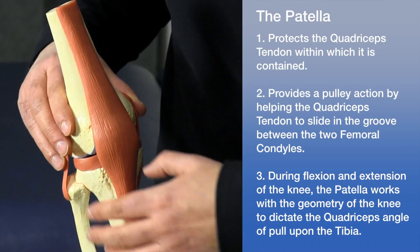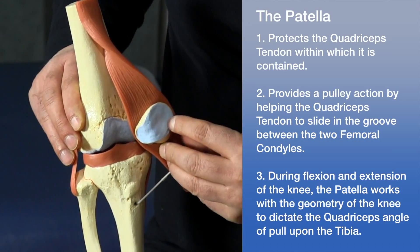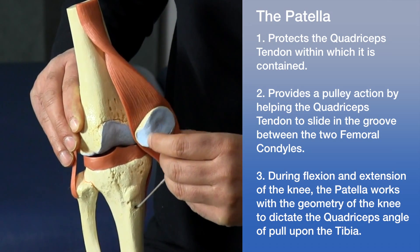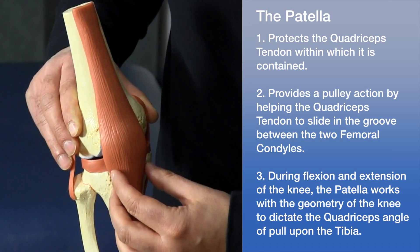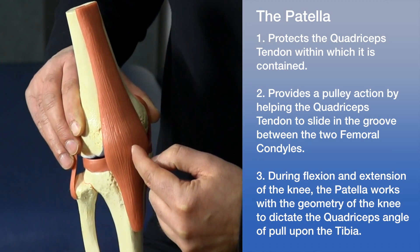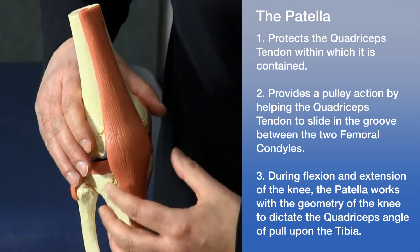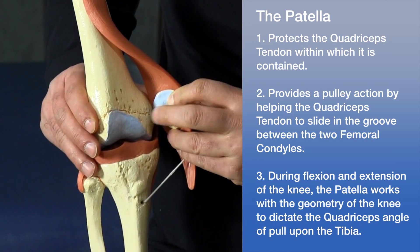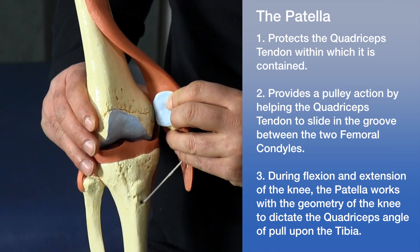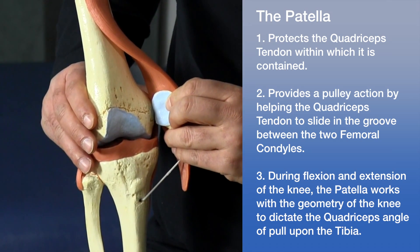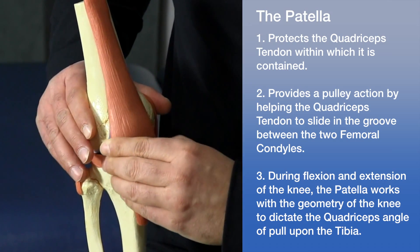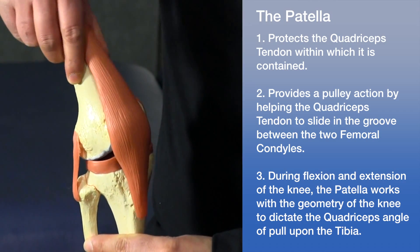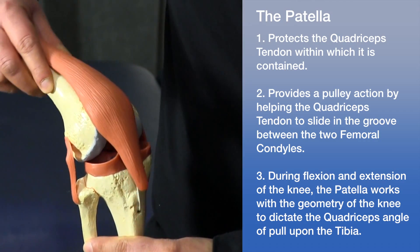Now let's talk about the patella. The patella's surface is covered in articular cartilage, which helps it to glide. Its main function is to protect the quadriceps tendon, and the patella is actually embedded within that tendon. During motion, the tendon glides and slides through a groove — the groove on the patellar surface of the distal femur — which is also covered in articular cartilage to reduce friction. The patella glides back and forth through the groove, acting like a pulley as it protects the tendon.